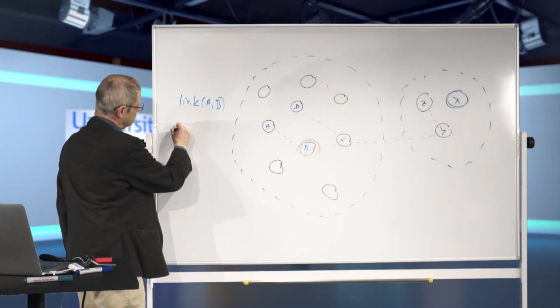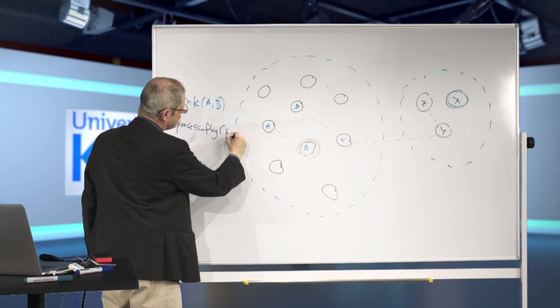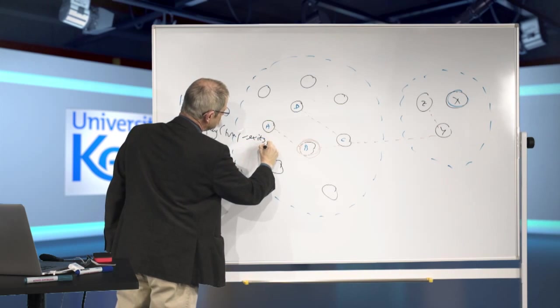that means that process B becomes a firewall process. And it doesn't die if it receives an error signal. Now to turn it into a system process, we say, process flag, trap exit, trap exit. It's true.